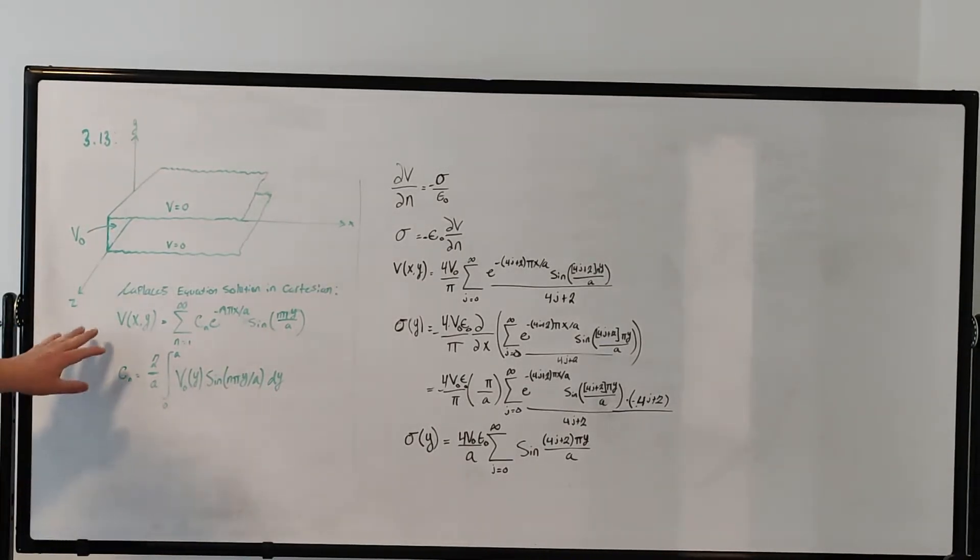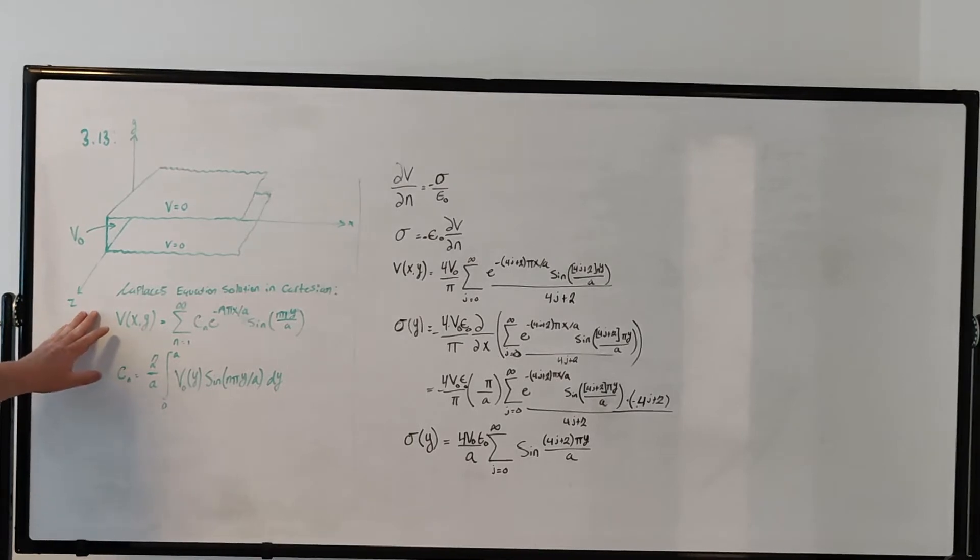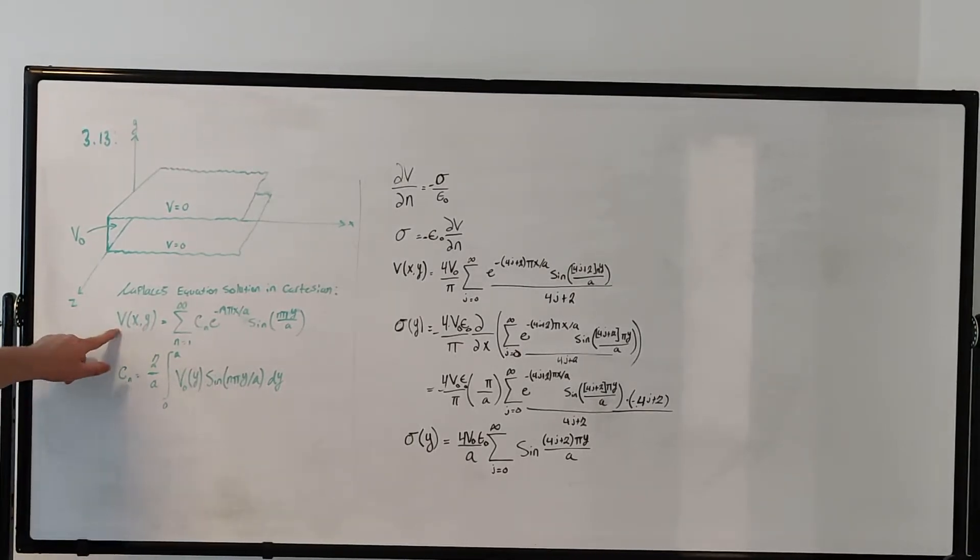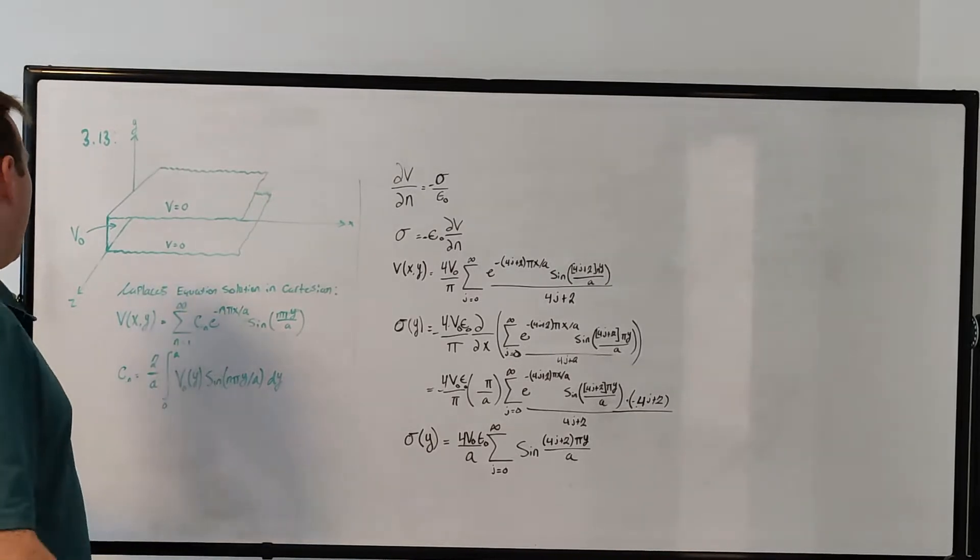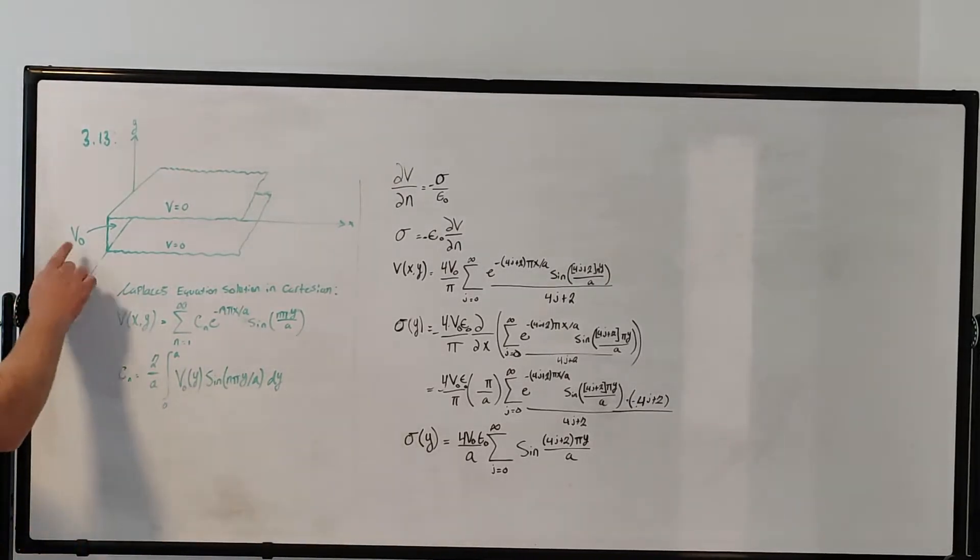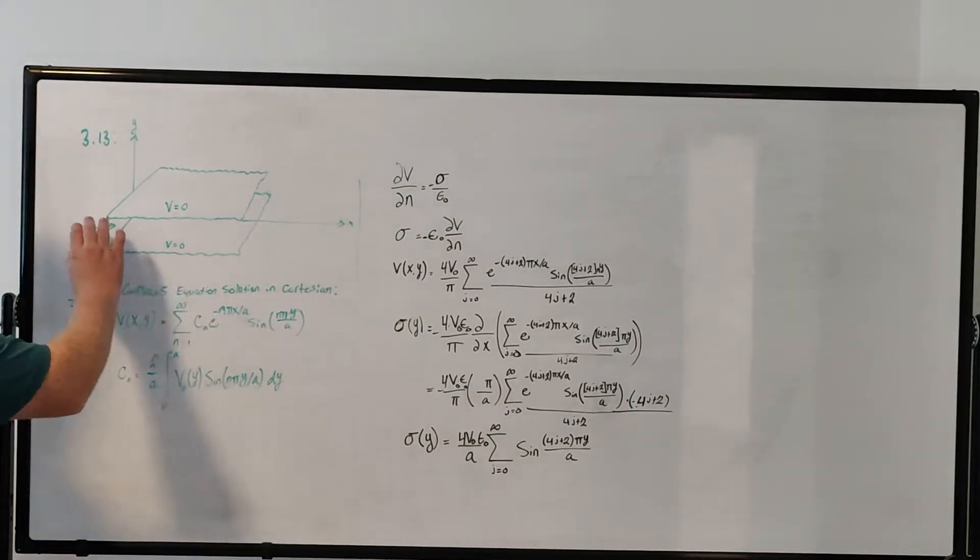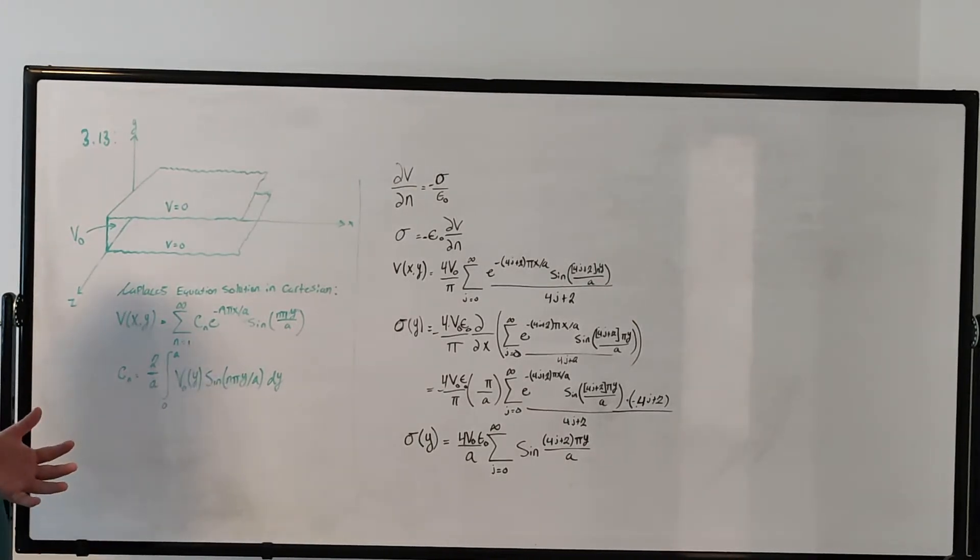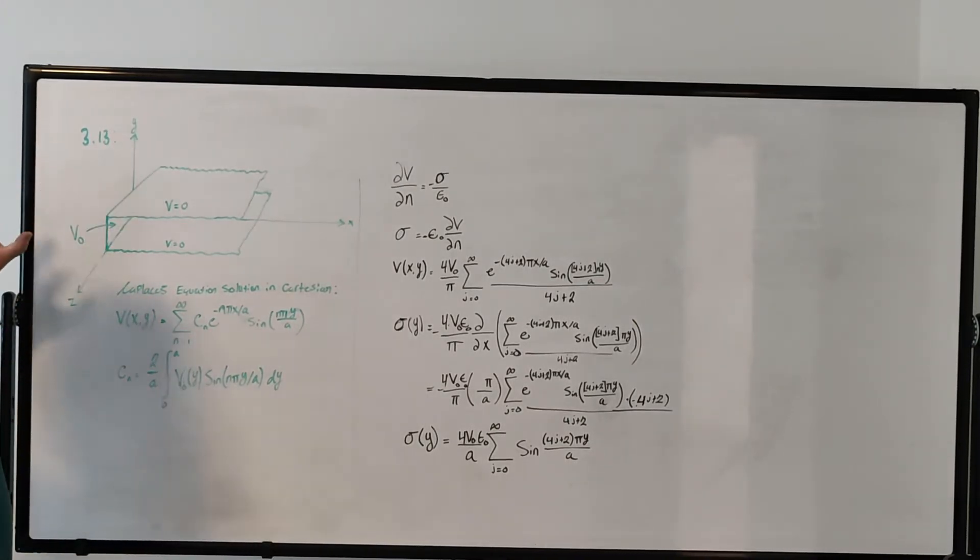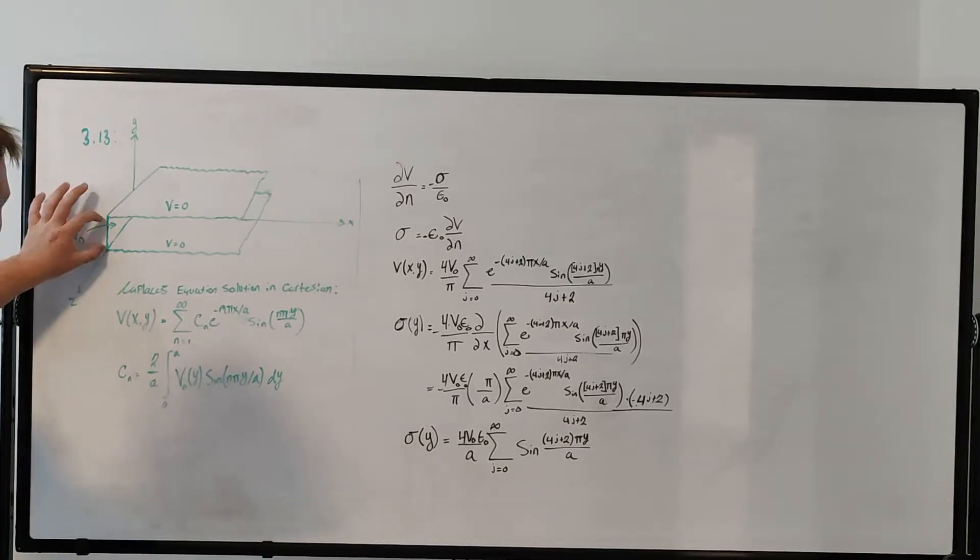This is just a reminder of Laplace's equation solution in Cartesian coordinates, where the coefficients are equal to this. So we want to find, given that this is at a constant potential, we've already solved what the actual potential function is in between the plates, but now we want to figure out how the charge distributes itself on this metal plate.